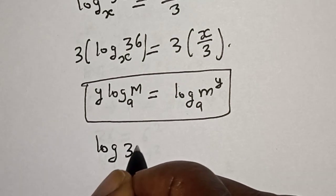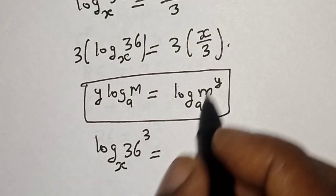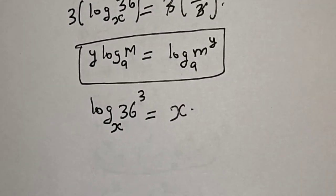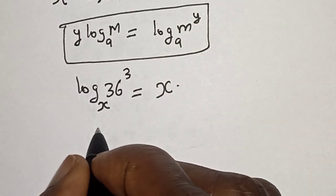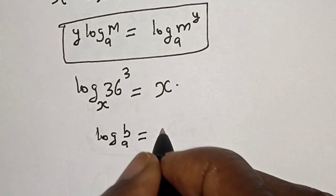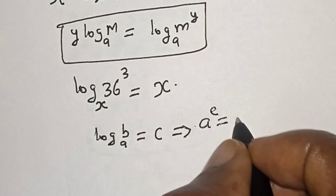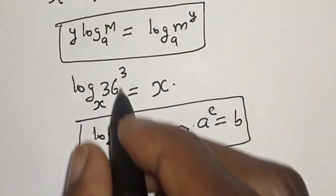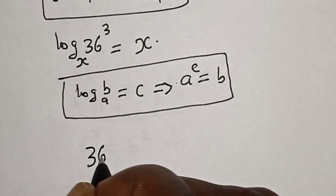Now also take note of this rule: if you have log base a of b is equal to c, then a raised to power c is equal to b. So let's take now this rule. From here we have 36 raised to power 3 is equal to x raised to power x.